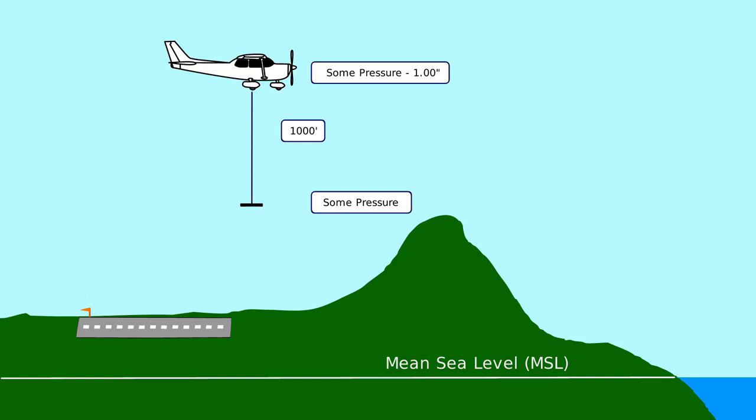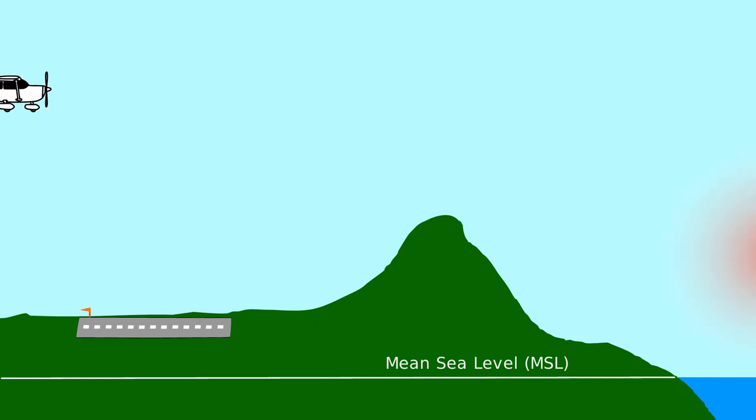But we still have to know at what altitude we started. Air pressure on the surface of the Earth isn't a constant. It changes over time as air masses come and go, and it also changes as planes move around.